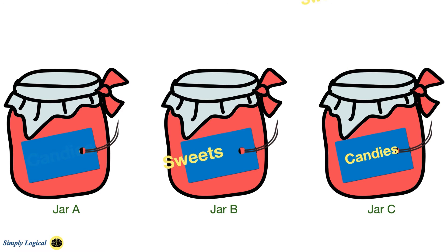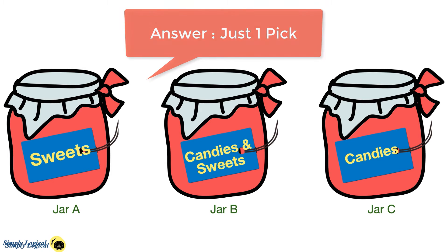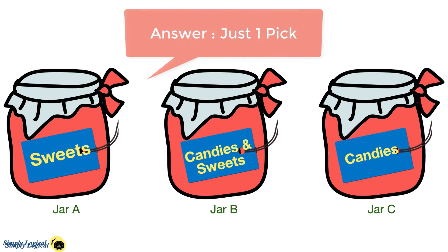Thus, the correct labels are: jar A contains sweets, jar B contains candies and sweets, and jar C contains candies. The answer is just one pick of an eatable is required to correctly label the jars.